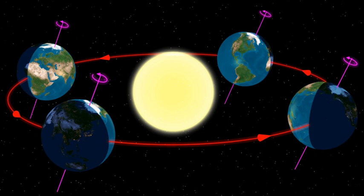Heliocentrism is the scientific model that first placed the Sun at the center of the solar system and put the planets, including Earth, in its orbit. Historically, heliocentrism is opposed to geocentrism, which placed the Earth at the center.